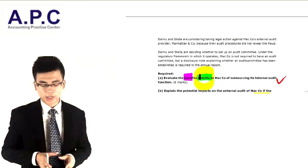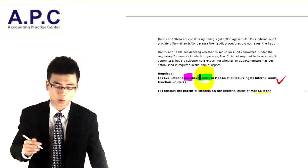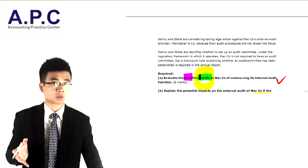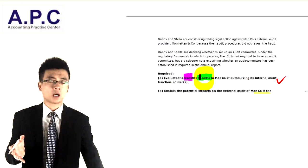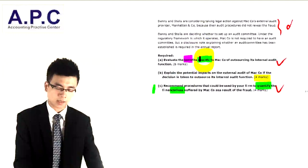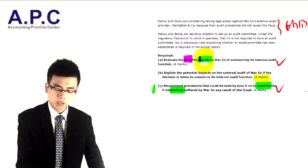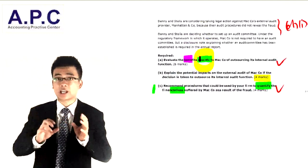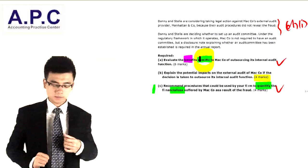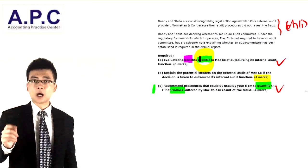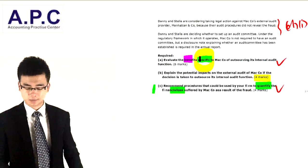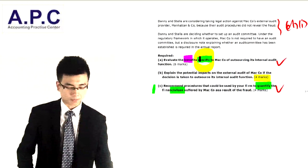There is consideration of taking legal action against Matco's external audit firm, Hart & Co., because their audit procedures did not reveal the fraud. But is it the responsibility of the external auditor to detect and prevent fraud? The answer is no — their primary objective is to express their opinion on the true and fairness of the financial statements.